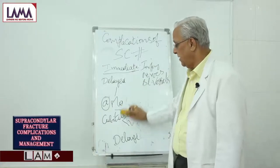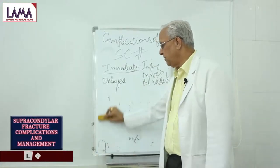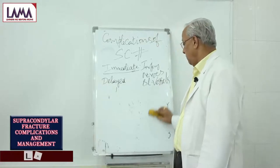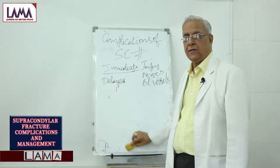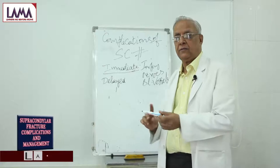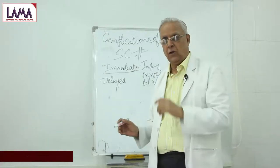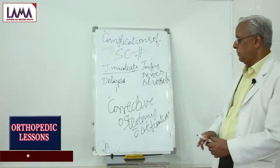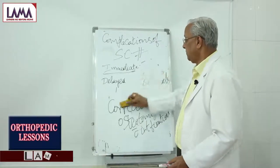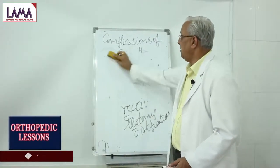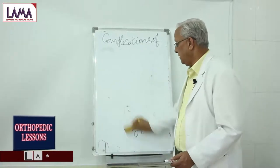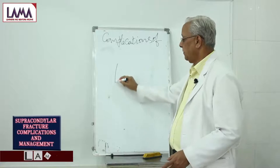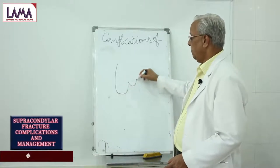More than that, the main problem with these deformities is cosmetic. So these people require what is known as osteotomy — corrective osteotomy with internal fixation. This means, suppose there is a malunited supracondylar fracture, the elbow and humerus will have grown unevenly on one side.